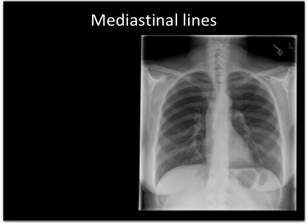Regarding the mediastinal lines, I cast my eye around all of those. Make sure the right paratracheal line isn't enlarged, that the azygoesophageal area looks okay, nothing going on in the region of the superior vena cava. I can see the aorta, the azygoesophageal line, and the descending aortic line all the way down. We should be able to see all of these — if we can't, we need to know why.